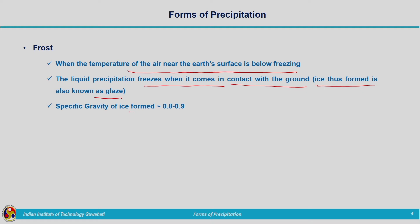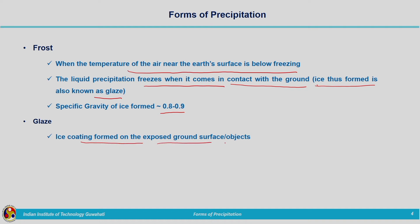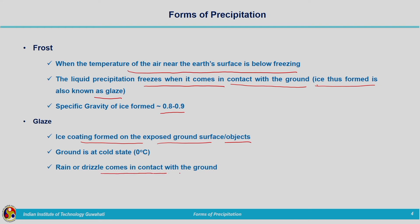Frost occurs when the ground surface is at a freezing temperature. The specific gravity of the ice thus formed is around 0.8 to 0.9. Glaze is the ice coating formed on the exposed ground surface or exposed objects. The temperature near the ground or near these exposed objects is approximately 0 degrees Celsius. When rainfall or water droplets fall on these surfaces at 0 degrees Celsius they convert to solid phase, forming ice — that ice formation is termed glaze. So frost and glaze are almost the same thing.